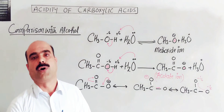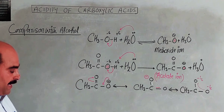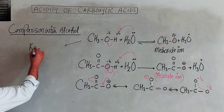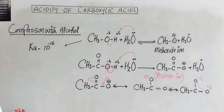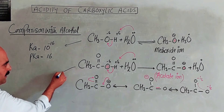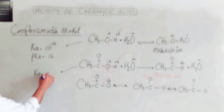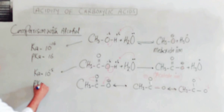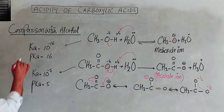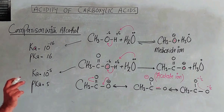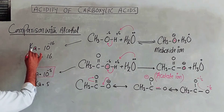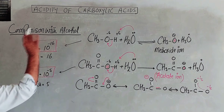Hence carboxylic acids are stronger acids than alcohols. The Ka and pKa values can be compared: the Ka of methyl alcohol is 10 raised to the power of minus 16, giving a pKa of 16. The Ka of acetic acid is 10 raised to the power of minus 5, giving a pKa of 5. Ka is directly related to acidity — the higher the Ka value, the stronger the acid — so acetic acid has a much higher Ka than methyl alcohol.